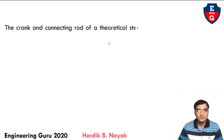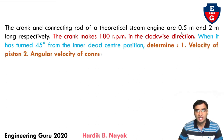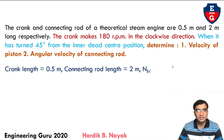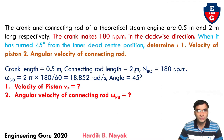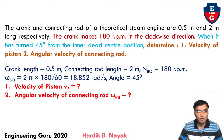Here is the problem: the crank and connecting rod of a theoretical steam engine are 0.5 m and 2 m long respectively. The crank makes 180 RPM in the clockwise direction, so N_BO = 180 RPM. From this, omega_BO = 2πN/60 = 18.852 rad/s. The crank has turned 45° from IDC.